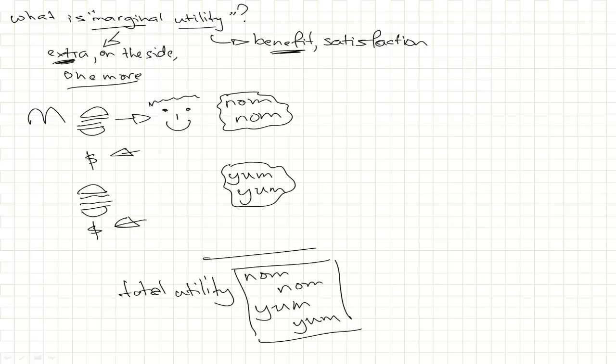But your marginal utility, that's where we draw a line here, is the extra benefit you get from the first burger. And then the marginal utility for the second burger is the enjoyment you get only for the second burger.